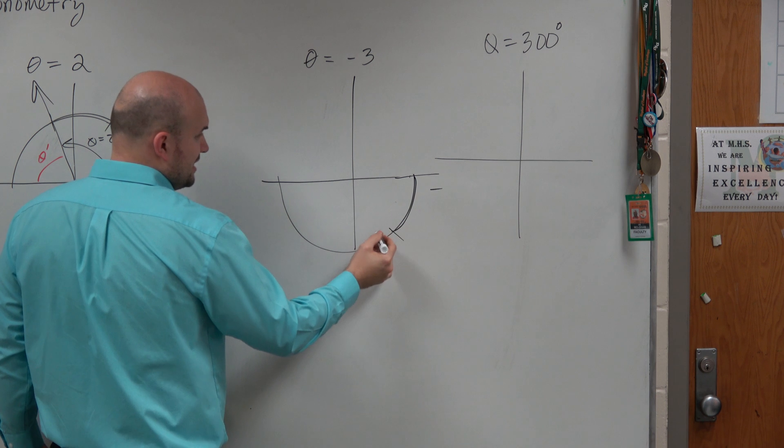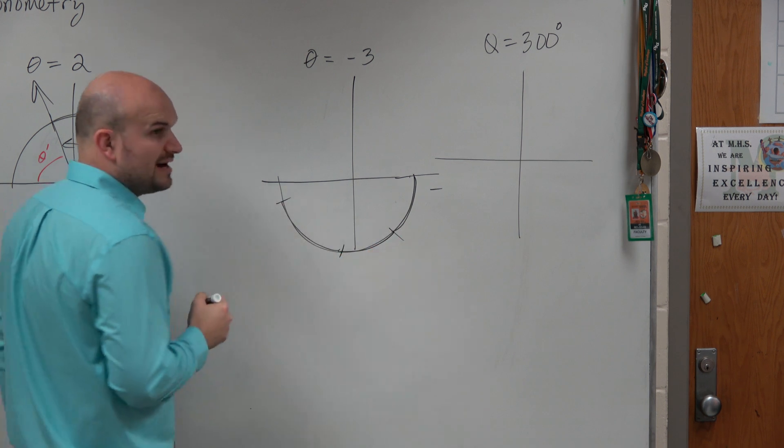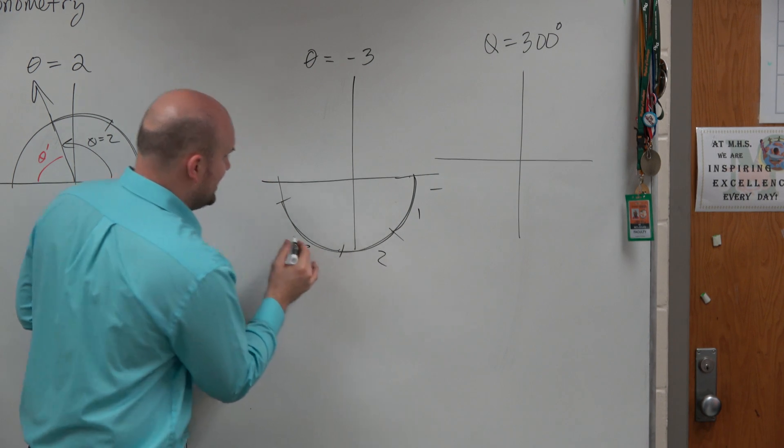So here's one radian, two radians, three radians, right? One radian, two radians, three radians.